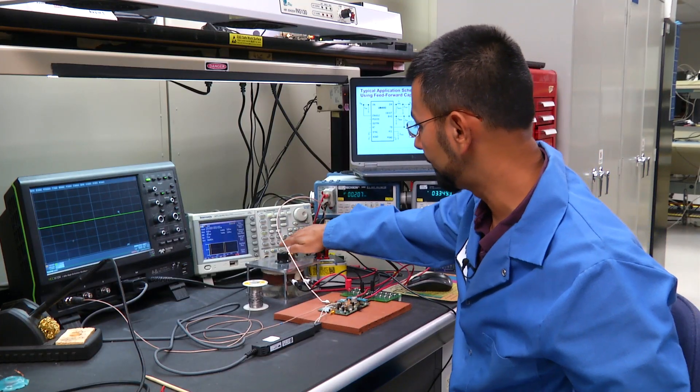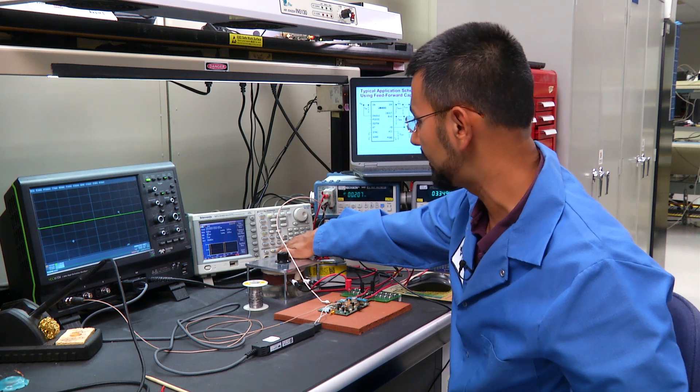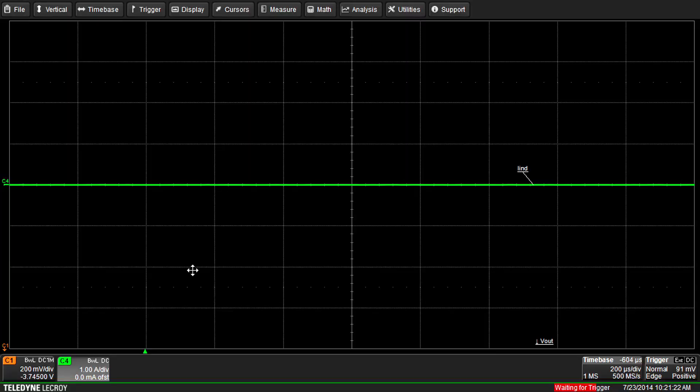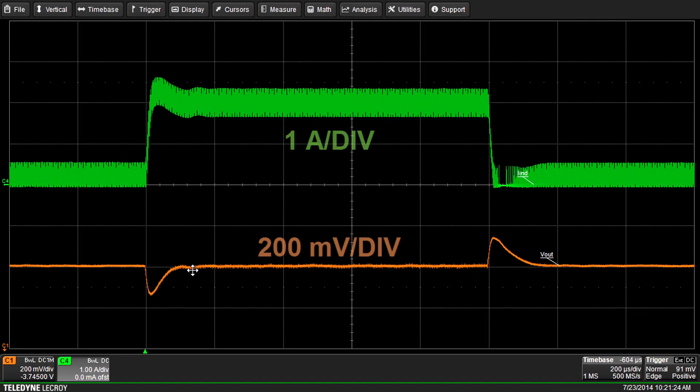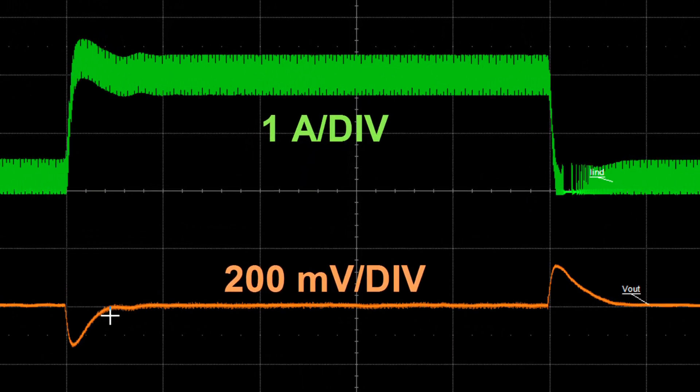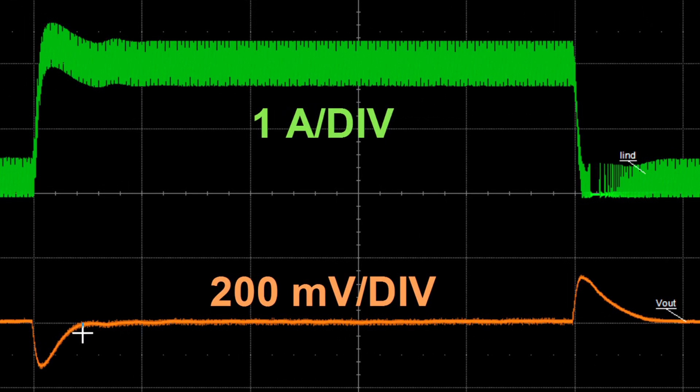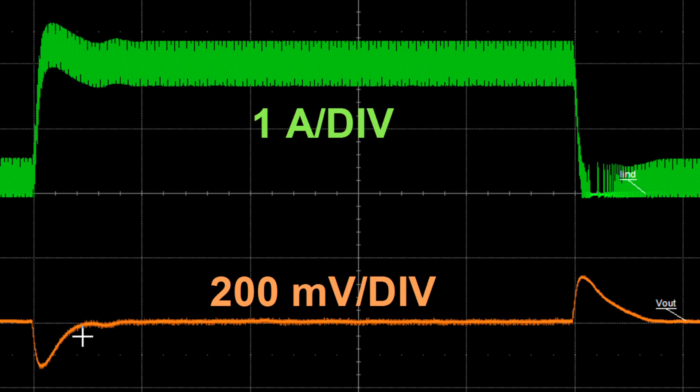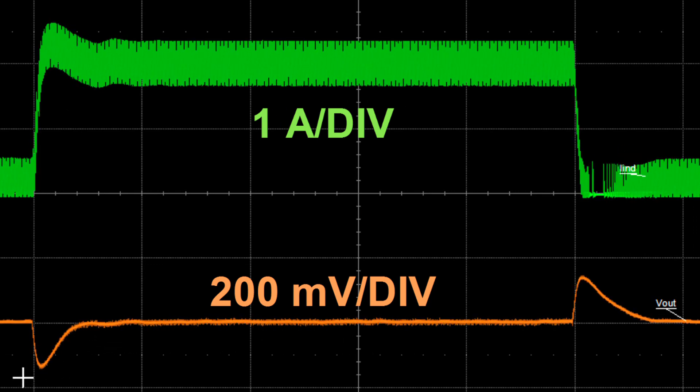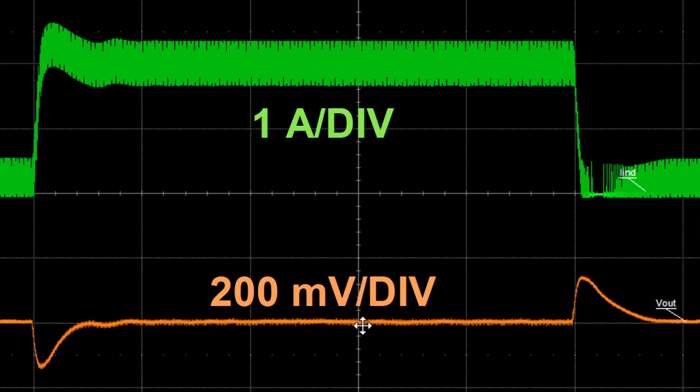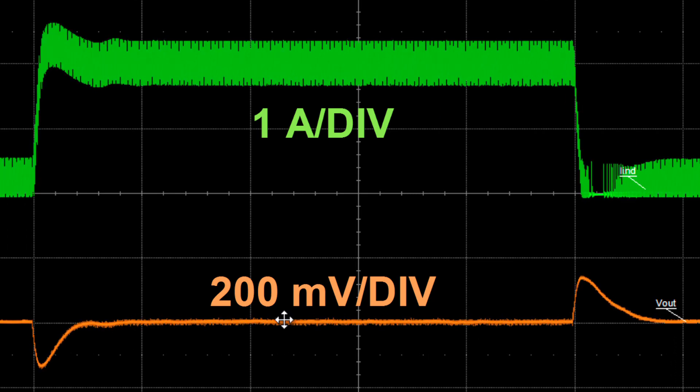And I'm going to turn the function generator on to give me a transition from 200 milliamps to 2 amps. As you can see addition of about 47 picofarads of CFF on this circuit greatly helps optimizing the design. The overshoots and undershoots are well below 200 millivolts and there is no ringing on the output voltage.